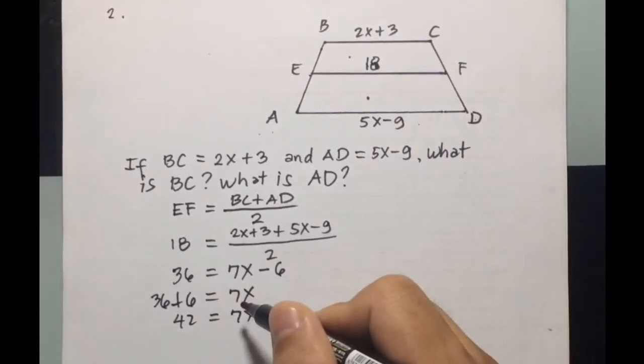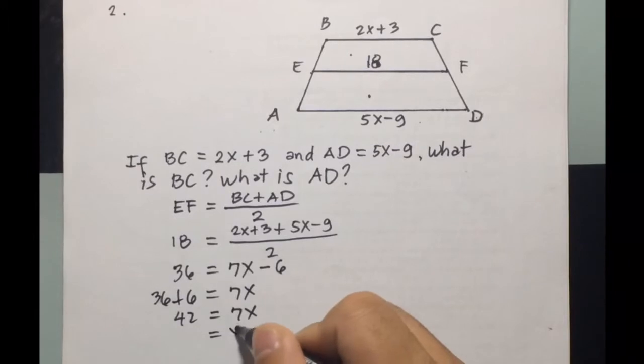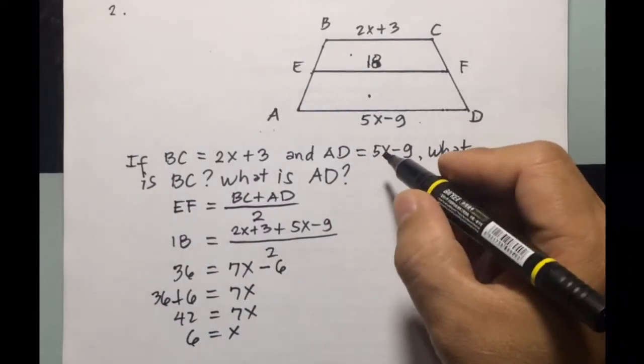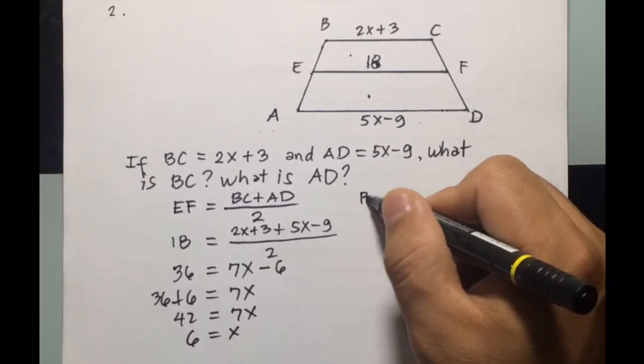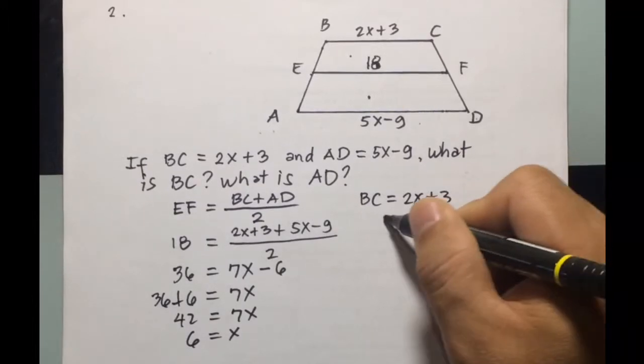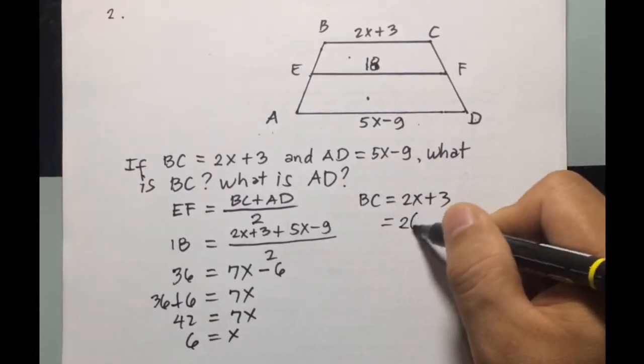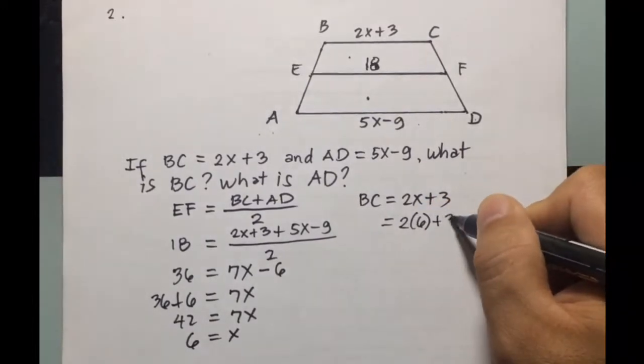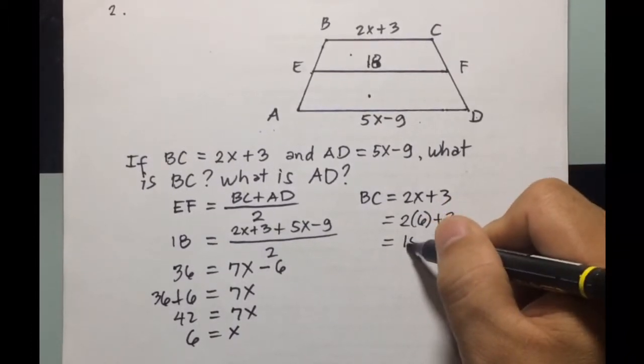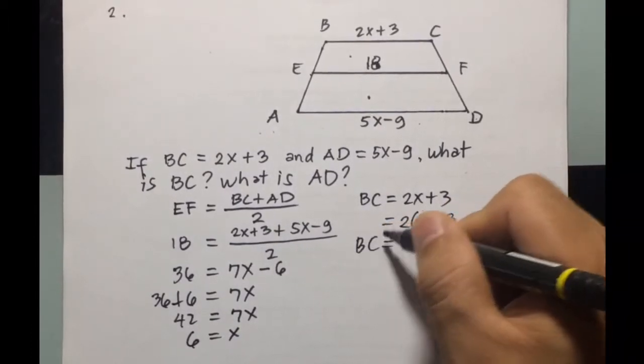Then dividing both sides by 7, we can have X equals 6. So the value of X here is 6, so we're going to have BC as 2X plus 3, then X is 6, so 2 times 6 then plus 3, that will be 12 plus 3, 15. So BC is equal to 15.